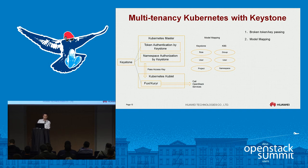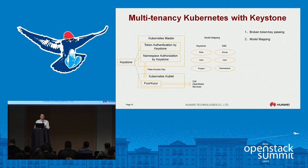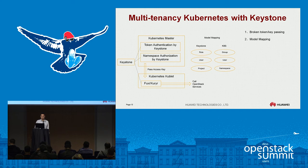We needed to pass this access key through, so we wrote a plugin to pass the access key from the API server to Kubernetes, connecting the Kubernetes master and minions. Also, the role concepts are different: Keystone has role, user, and project, while the Kubernetes cluster has group, user, and namespace. We mapped project to namespace and group to role, making this role system work for both Kubernetes and OpenStack.